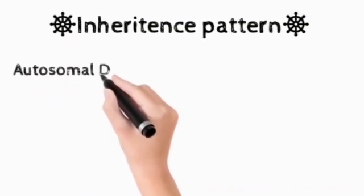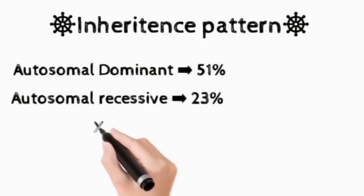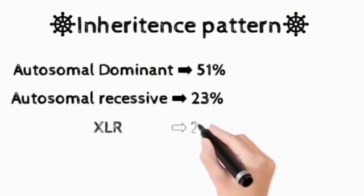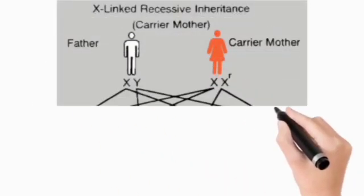As I told you, this is an inherited disease. Here is the inheritance pattern: autosomal dominant 51%, autosomal recessive 23%, X-linked recessive 21%. This is the flow sheet of XLR.